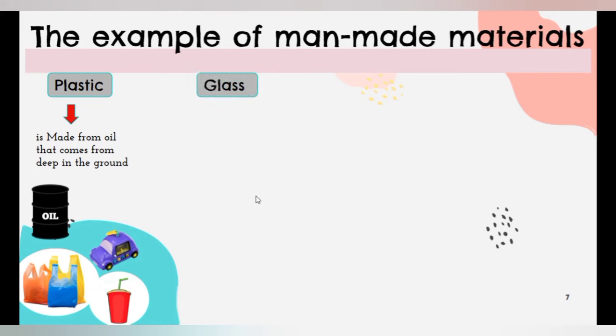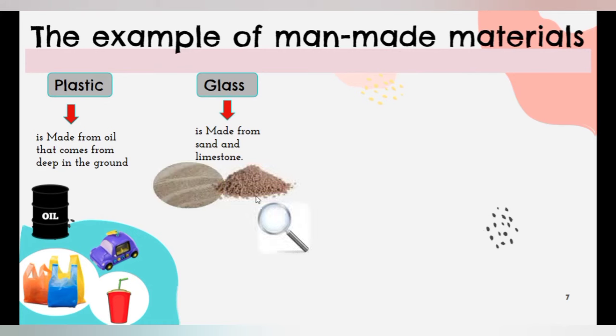Next, glass. Glass is made from sand and limestone. It can be used to make magnifying glass and gas jar.